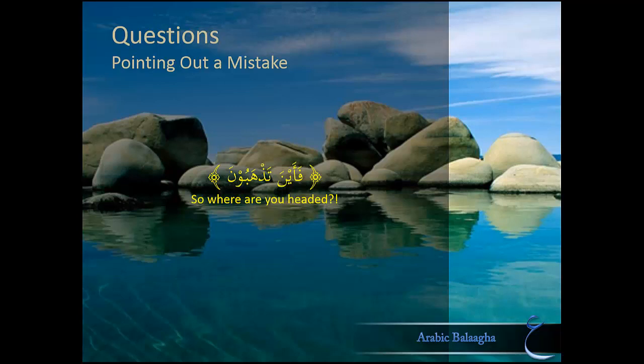Another use of rhetorical questions is to point out someone's mistake. Like when two people are walking together and one of them takes a wrong turn, the first one says 'Where are you going?' — he's not looking for an answer, he's just trying to show his friend that he's taking a wrong turn. An example of this comes in the Quran where Allah says فَأَيْنَ تَذْهَبُونَ (So where are you going? Where are you headed?).